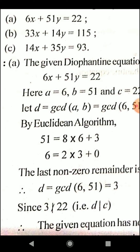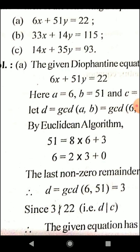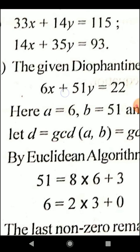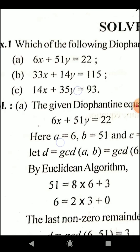For the second equation: 33x plus 14y equals 115. Here a equals 33, b equals 14, and c equals 115. By the Euclidean algorithm, the GCD of 33 and 14 is 1, since 33 is not divisible by 14 and their only common divisor is 1. Since 1 divides any integer, including 115, this Diophantine equation is solvable and has a solution.